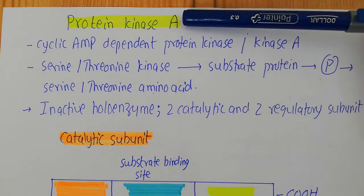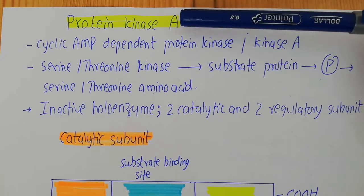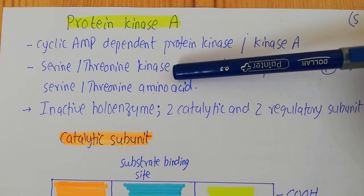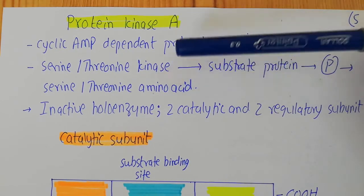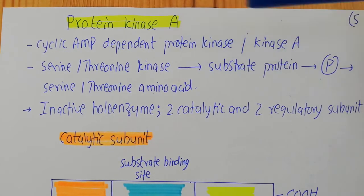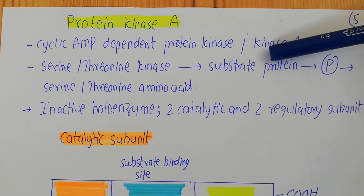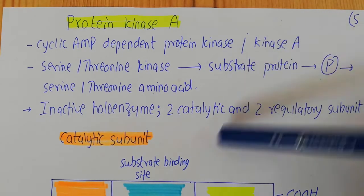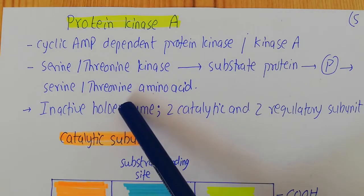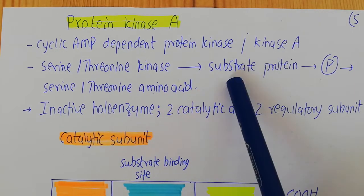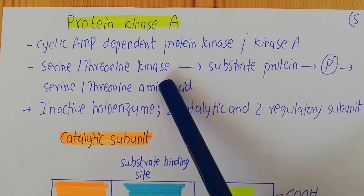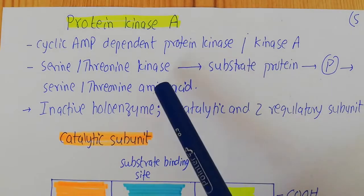When you talk specifically about protein kinase A, it is a serine-threonine kinase. What this means is that when protein kinase A interacts with its substrate protein, it adds a phosphate group on the serine or threonine amino acids in that substrate protein. This makes it a specific kinase - protein kinase A is a serine-threonine kinase.